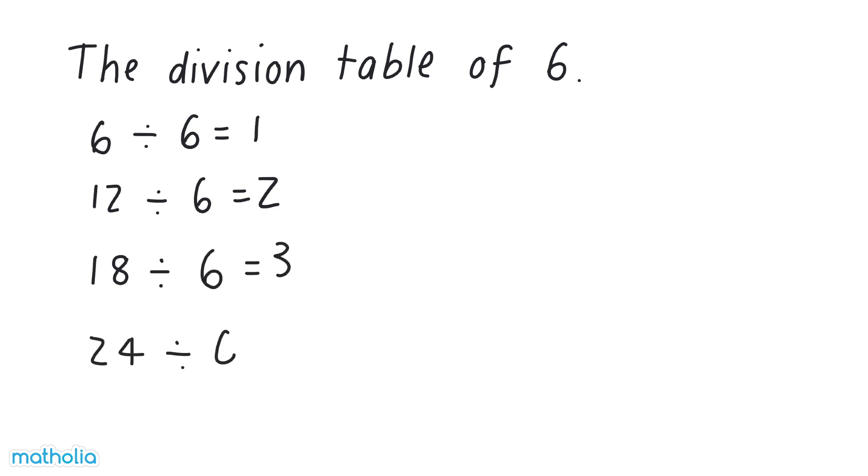Twenty-four divided by six equals four. Thirty divided by six equals five. Thirty-six divided by six equals six. Forty-two divided by six equals seven.